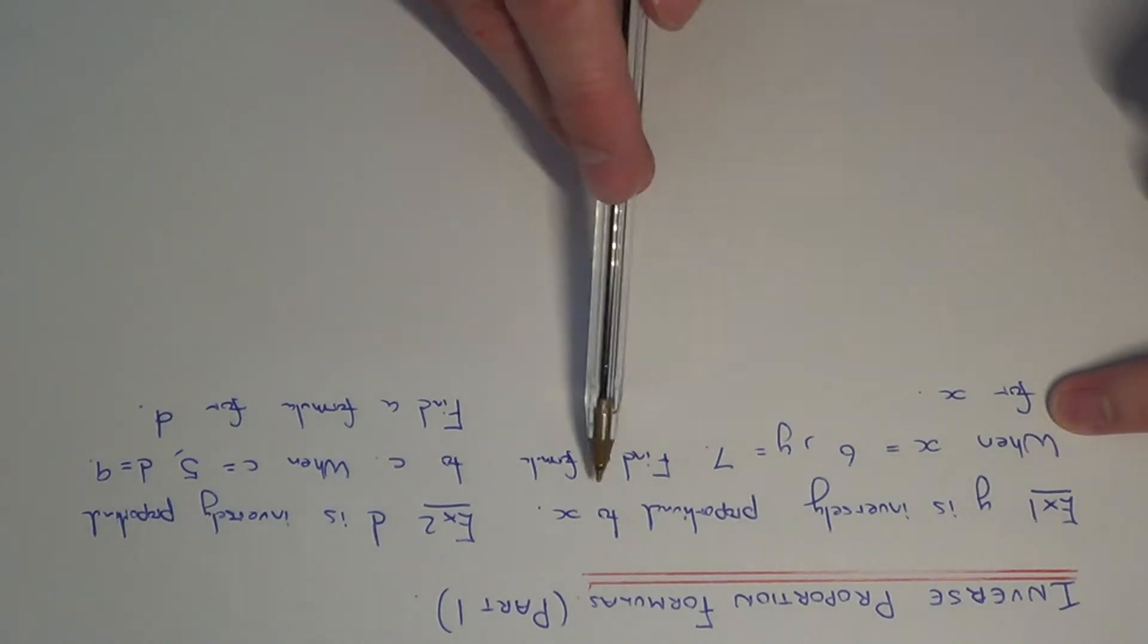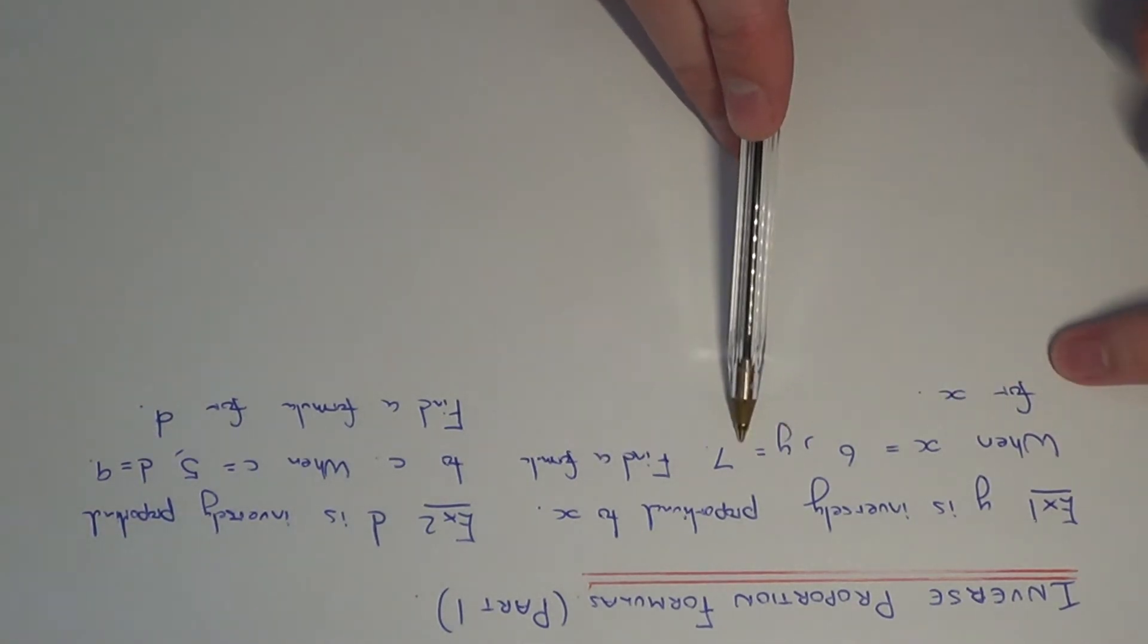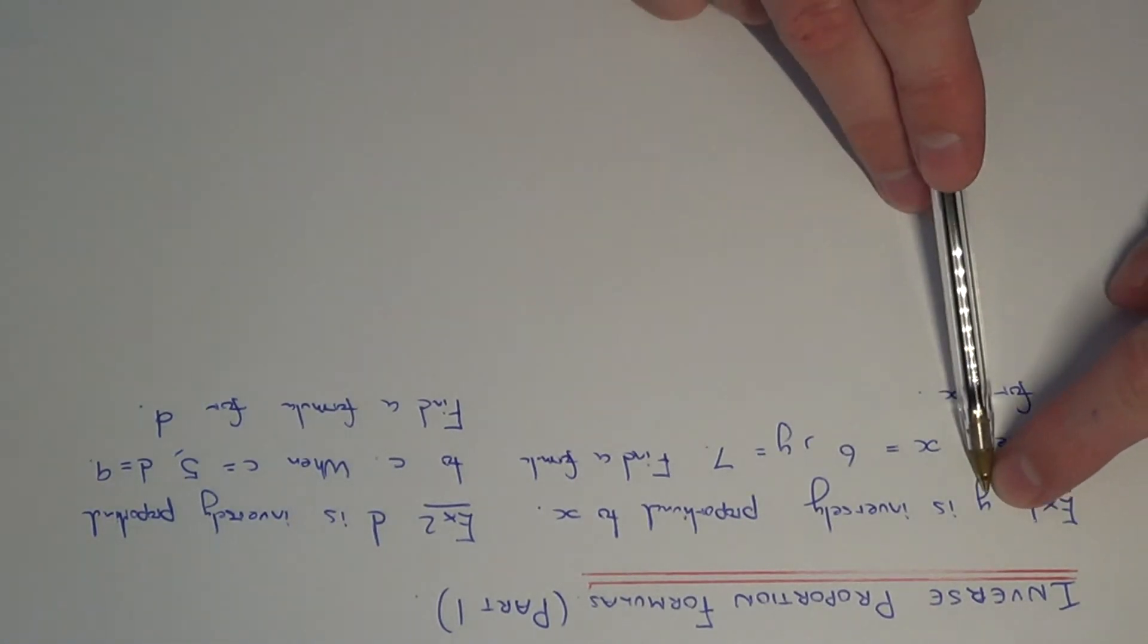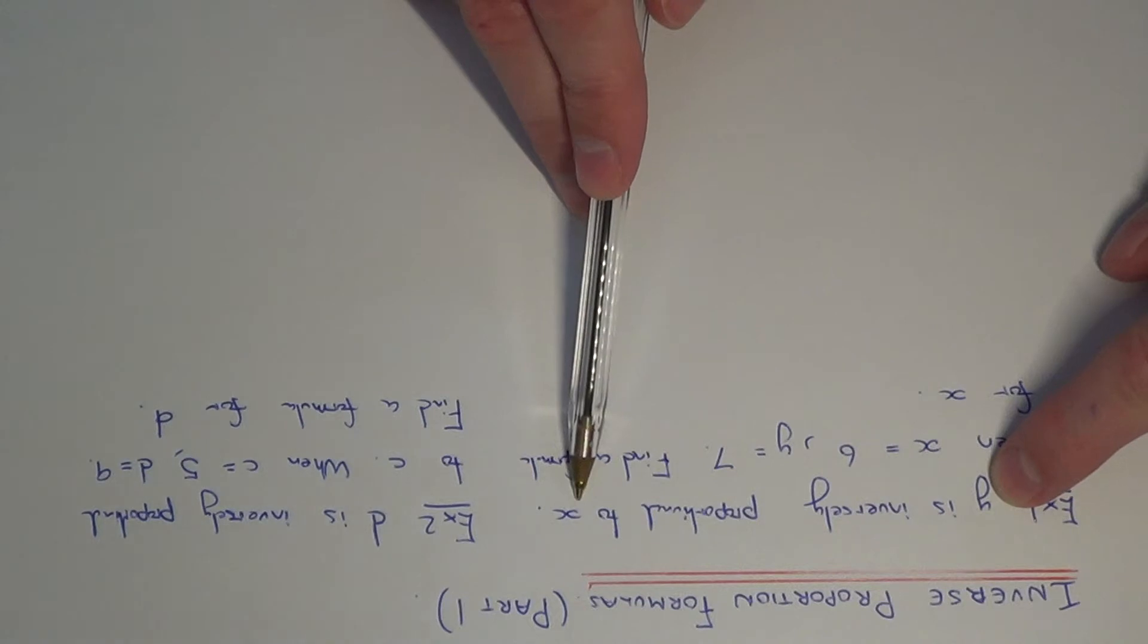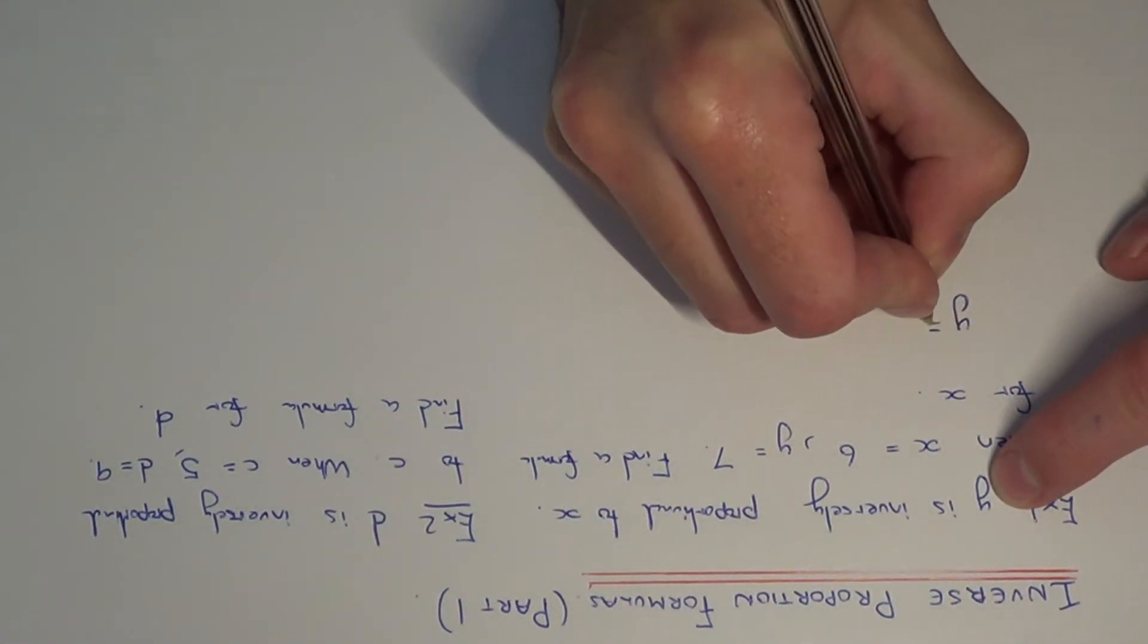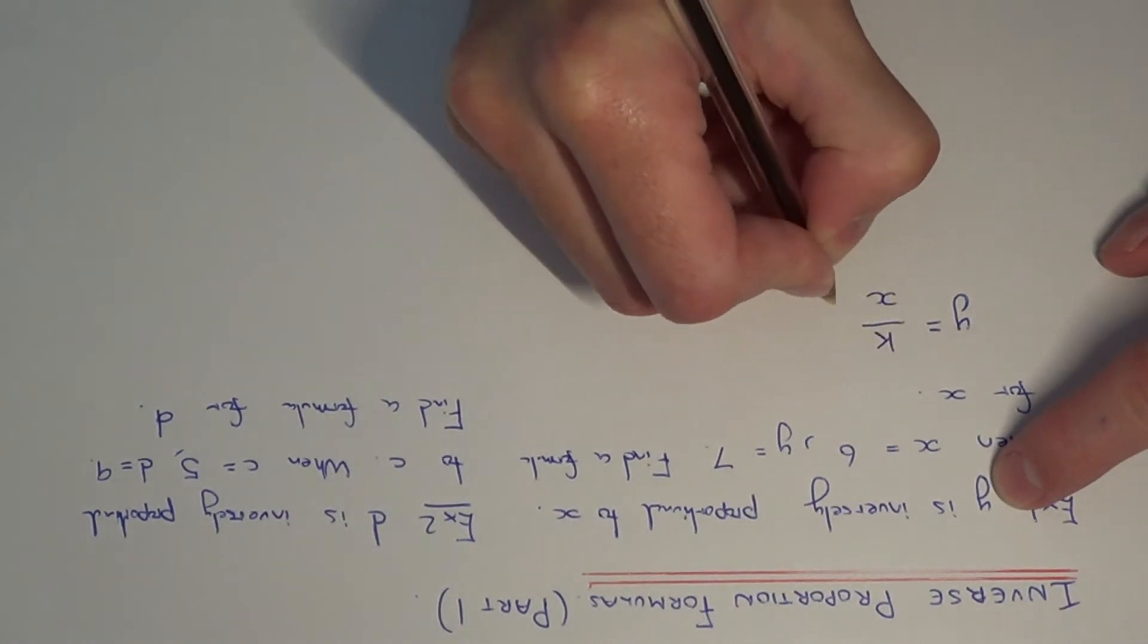So we've got y is inversely proportional to x, and when x equals 6, y is equal to 7. Find the formula for x. So if y is inversely proportional to x, this means our formula will take the shape of y equals k divided by x.